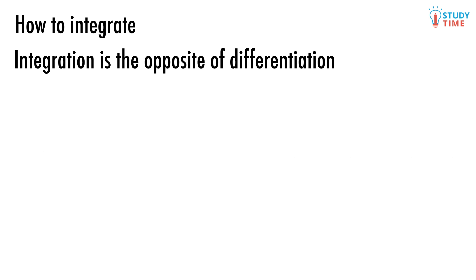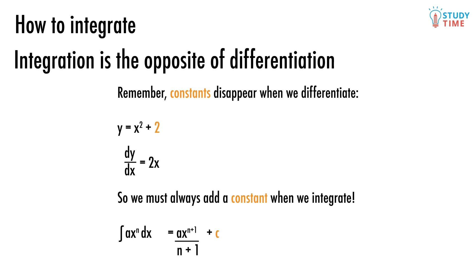But we aren't done yet. Remember how, if there are any numbers without x's in them in an equation, these vanish when we differentiate. For example, if we have y equals x squared plus 2, and differentiate this, we'd get dy dx equals 2x. And so the two simply disappeared. What this means is that when we start out with the gradient, we have no way of telling if there was actually some number on the end of it that disappeared when the original equation got differentiated. So we always need to add a plus c onto the end of our integrations. That means the real answer to our old problem is this: a times x to the power of n plus 1 divided by n plus 1 plus c.